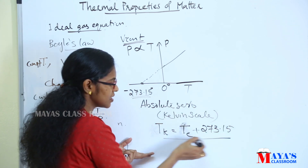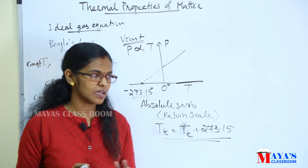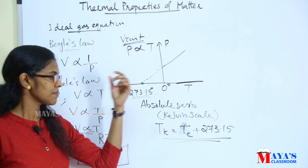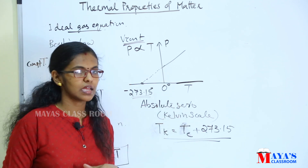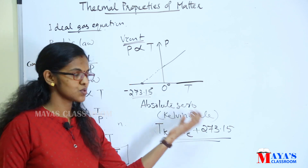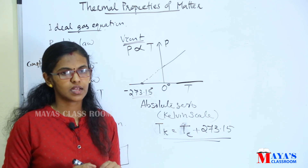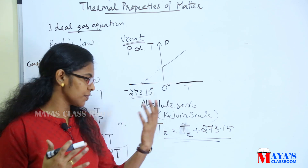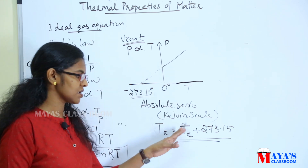What is the Kelvin scale? The Kelvin scale is defined such that absolute zero, where constant-volume pressure is zero, is the starting point. Kelvin is converted from degree Celsius by adding 273.15. So K equals degree Celsius plus 273.15.